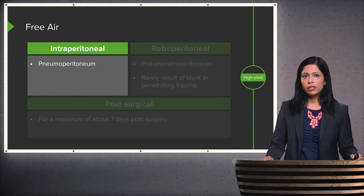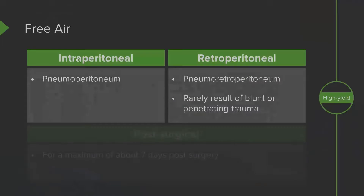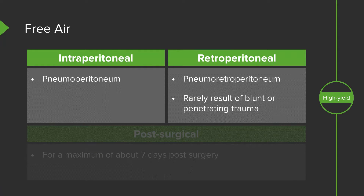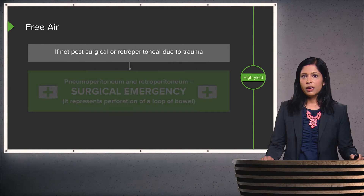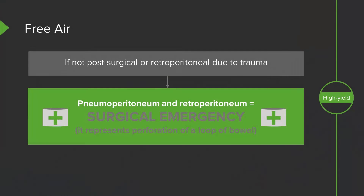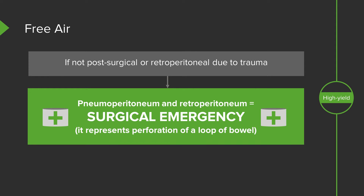Free intraperitoneal air is also called pneumoperitoneum, and free retroperitoneal air is called pneumoretroperitoneum. Retroperitoneal free air is rarely the result of blunt or penetrating trauma. Postsurgical free air is normal and can be seen for a maximum of about seven days post-surgery. If the patient is not post-surgical and does not have retroperitoneal air due to trauma, this is a surgical emergency, as it represents perforation of a loop of bowel.